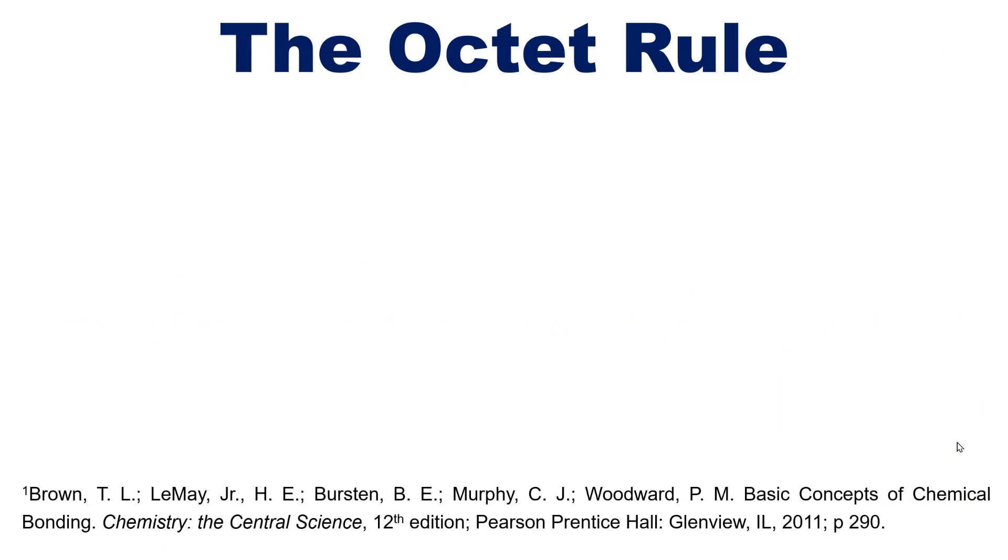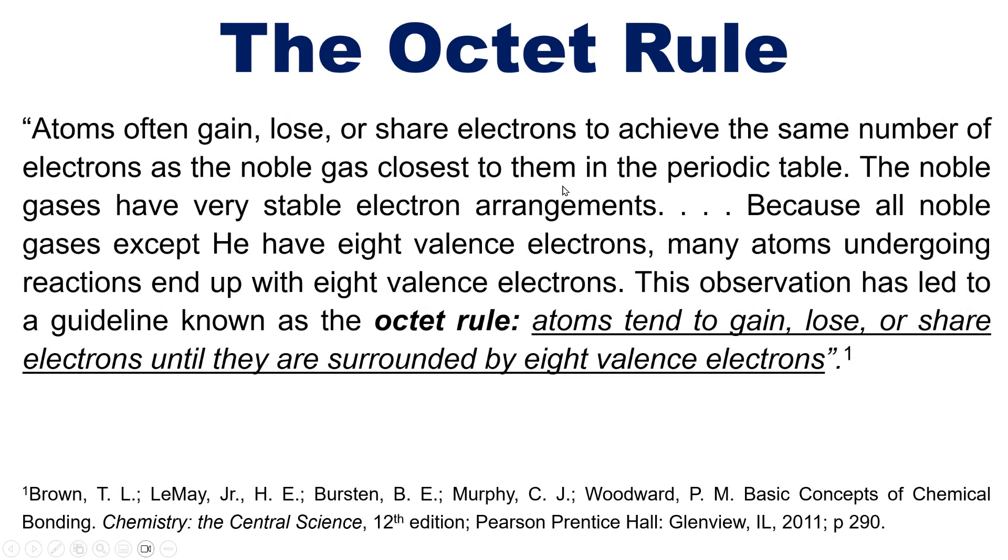So lifting a quote directly from our text referenced in the description below, we learn that atoms often gain, lose, or share electrons to achieve the same number of electrons as the noble gas closest to them on the periodic table. Now the noble gases have very stable electron arrangements. Now because all noble gases except helium have eight valence electrons, many atoms undergoing reactions end up with eight valence electrons. This observation has led to a guideline known as the octet rule that atoms tend to gain, lose, or share electrons until they are surrounded by eight valence electrons.